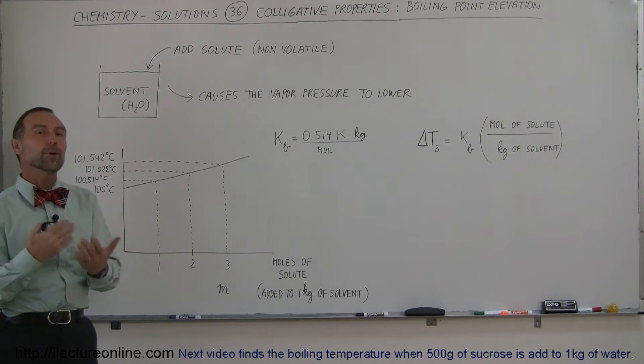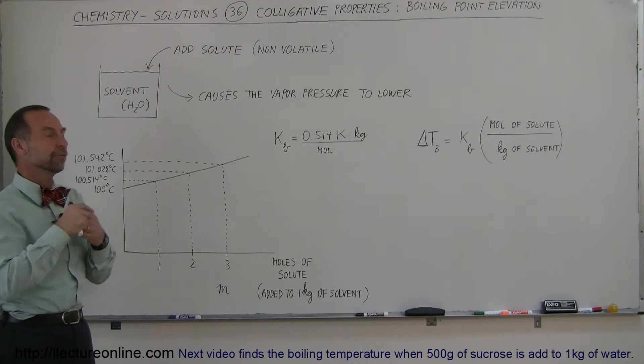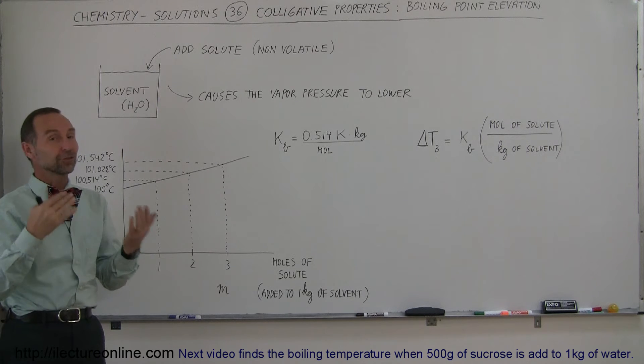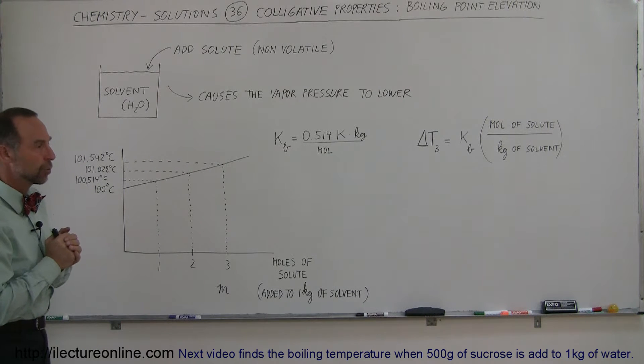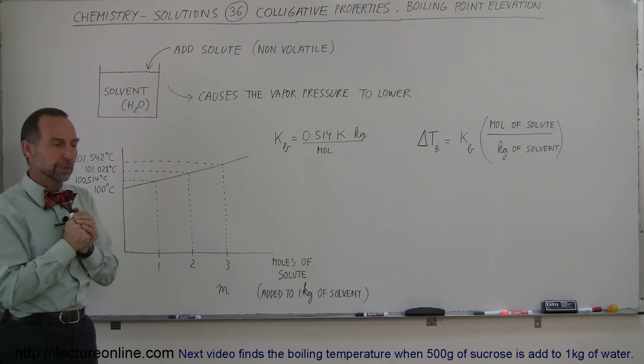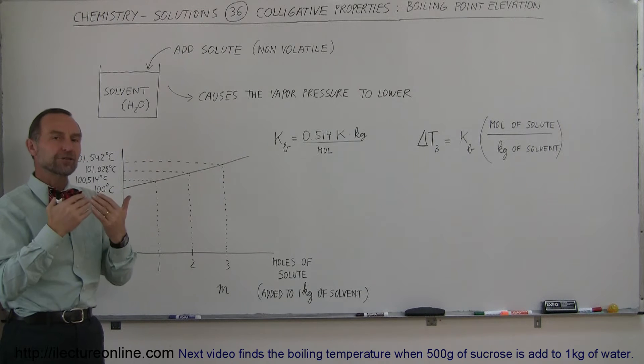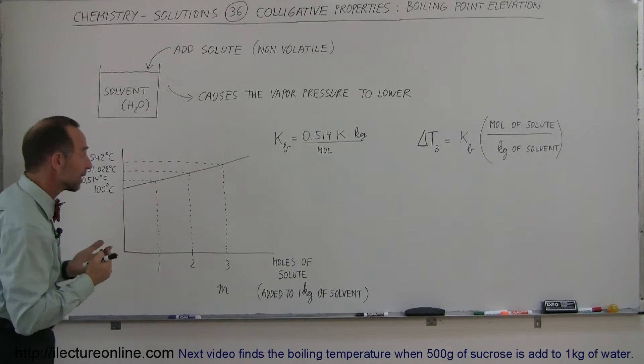Let's now take a closer look at the boiling point elevation caused by putting a non-volatile solute in a solvent like water. So we know that the vapor pressure will be lowered. That means that the solution will then boil at a higher temperature, and that's what we're trying to figure out here.